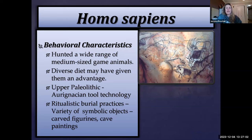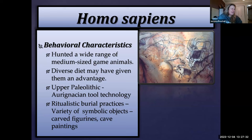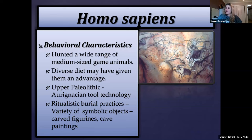Homo sapiens also had a basic atlatl — a bow-and-arrow type device — which allowed them to hunt from a distance, standing perhaps 40 feet back from dangerous game animals, unlike Neanderthals who had to be much closer. There's also evidence that Homo sapiens had deliberate and ritualistic burial practices, with burials often containing symbolic objects like carved figurines and cave paintings. We sometimes associate the emergence of Homo sapiens with the emergence of very complex modern symbolism.